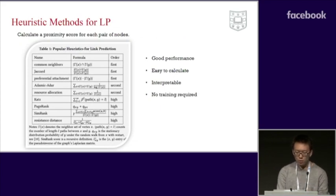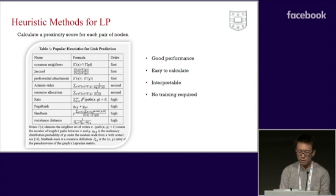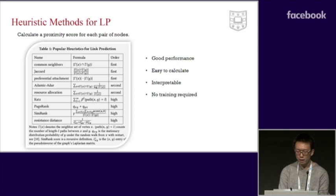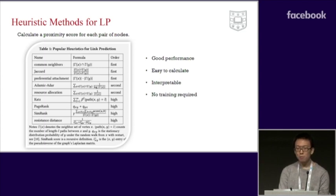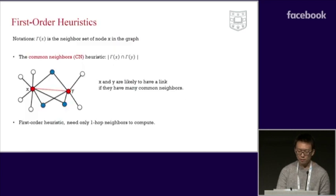A main category of link prediction methods are heuristic methods. A heuristic method calculates a proximity score for each pair of nodes as their likelihood of having a link. There are many very simple but effective heuristics for link prediction. Let's see some representative ones.